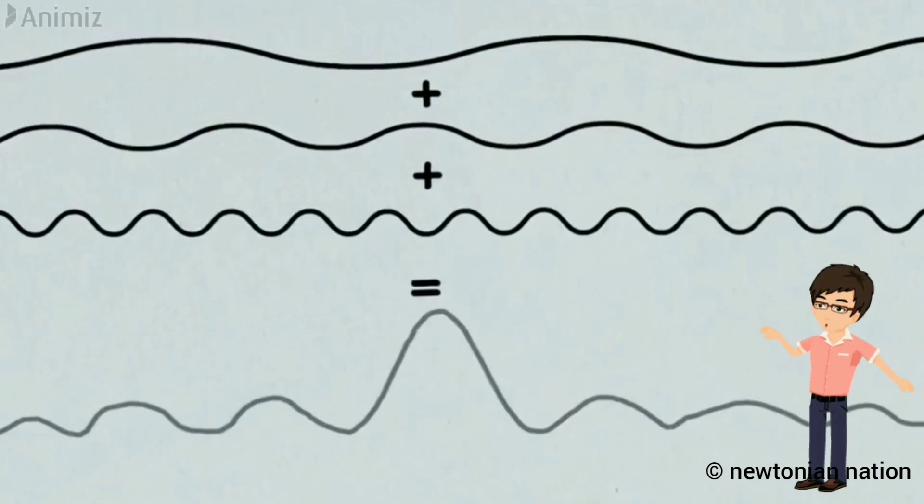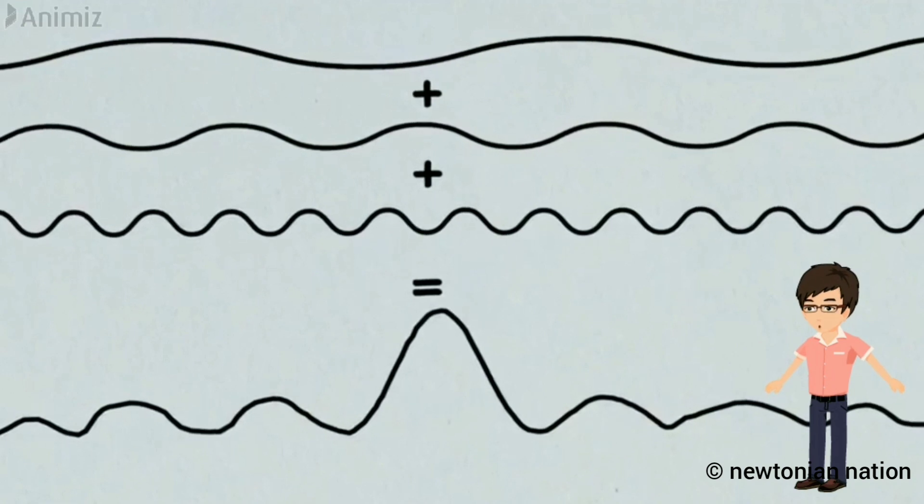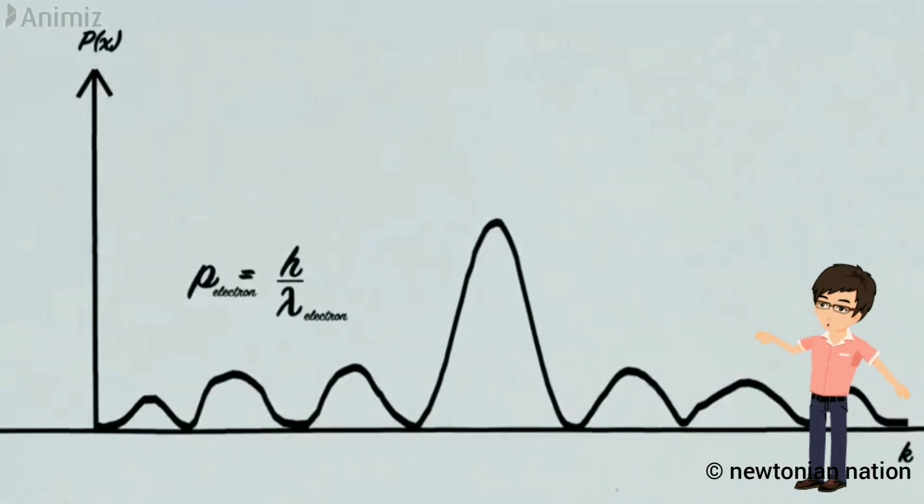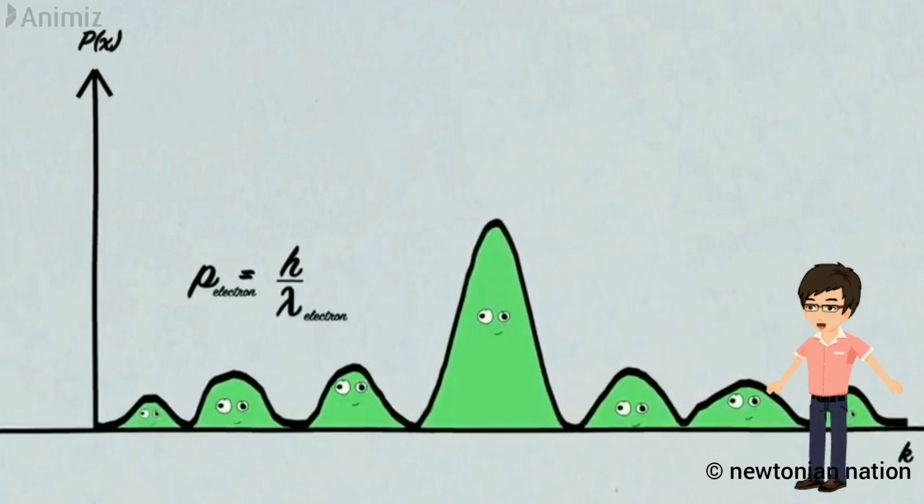But, waves have a special property. That is, when we add more waves together, they interfere and create a new wave. This is called wave pattern. Here, the electron is much more localized. But, this wave is made up of some of lot of different wavelengths.